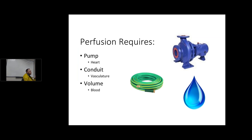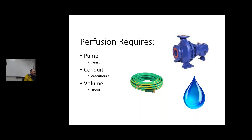Perfusion requires three things: the pump, the conduit — which is your vasculature — and the volume, the liquid. In order to have adequate perfusion, all of those need to be working well. If one goes down, the others try to compensate. So if you don't have enough volume, your vasculature constricts and your heart rate goes up.